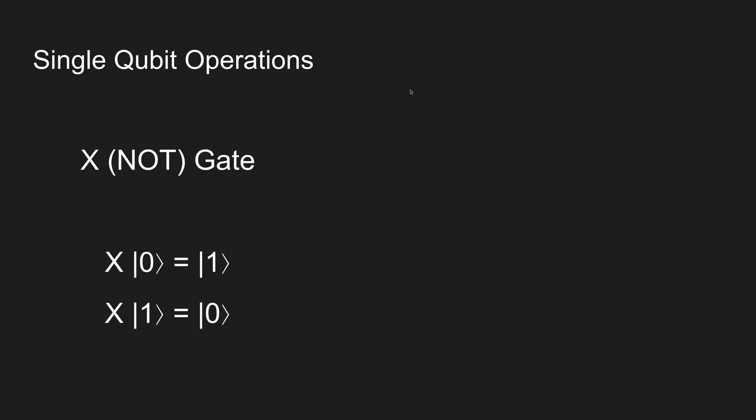Now let's look at the very basic operations on a single qubit. The first one is the X gate, also called the NOT gate — very similar to what you're used to in normal computer logic circuits. The NOT gate applied to the zero state will turn it into a one state, and the NOT gate applied to a one state will turn it into a zero state.